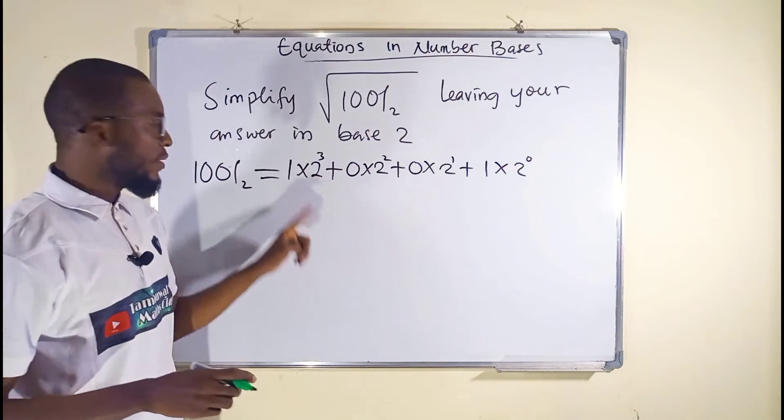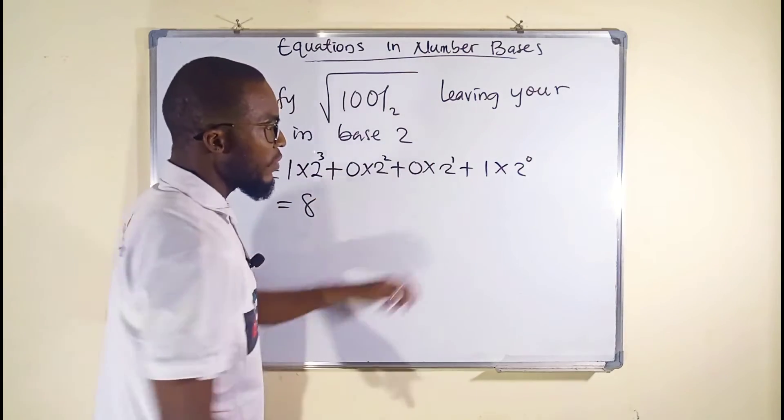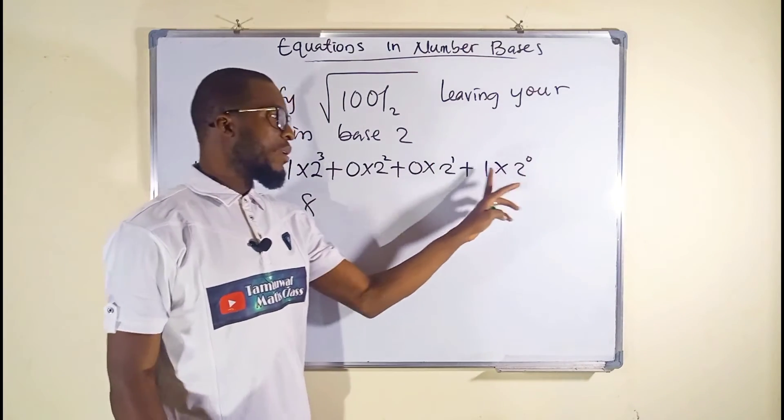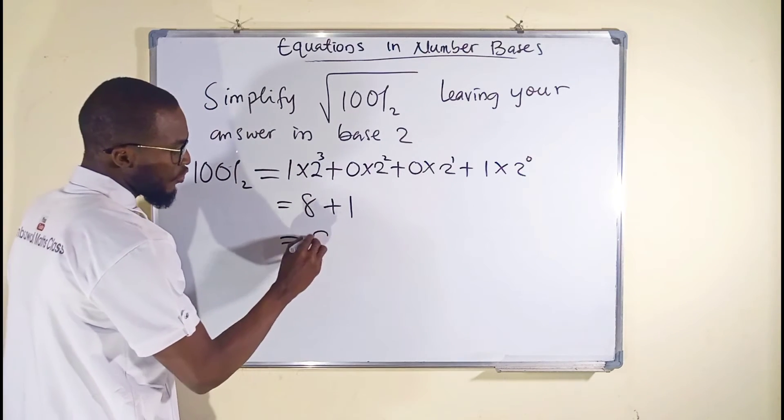2 power 3 is 8, times 1 is still 8. This will be 0, this will be 0. 2 power 0 is 1, times 1 is 1. This is equal to 9.